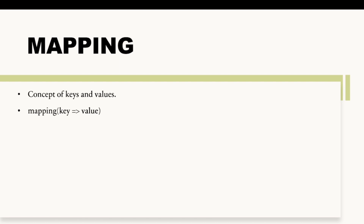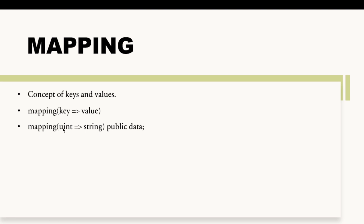Let's say I want to store information of students — specifically the name of students — and for every name I'm going to map it with their roll number. In this case, the data type of the roll number will be uint because roll numbers are numeric values, and then we'll have string data type because we are going to store the name of students. So this mapping is from uint to string.